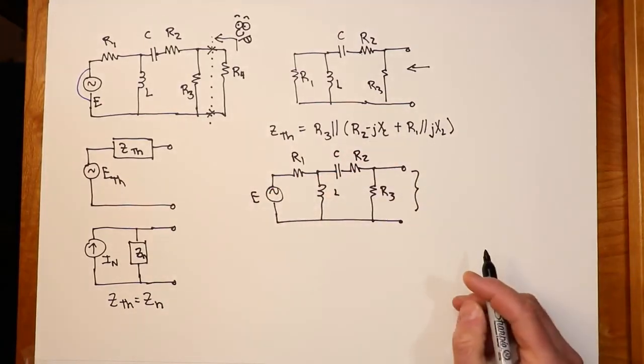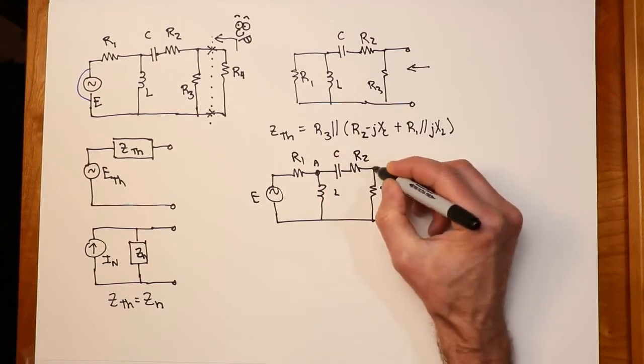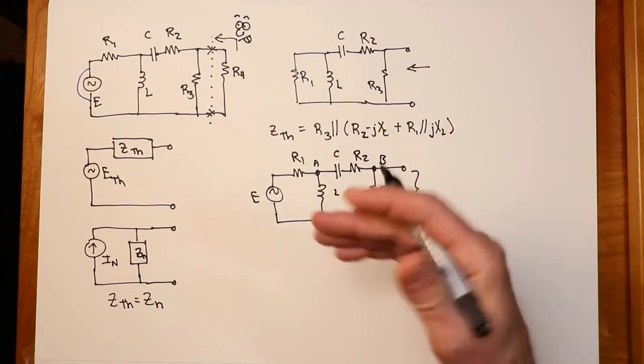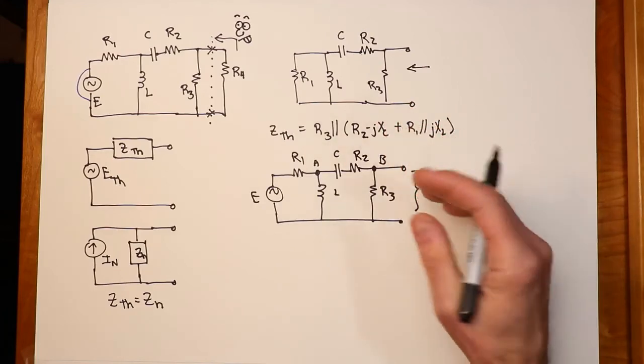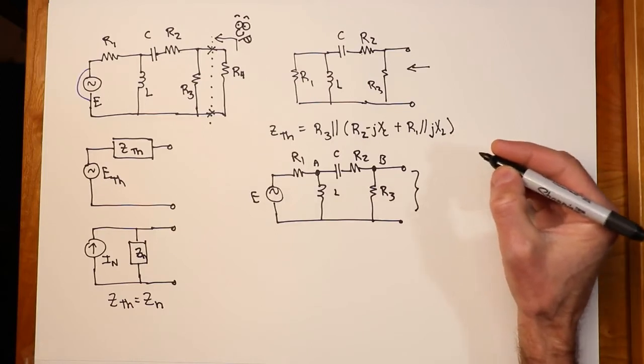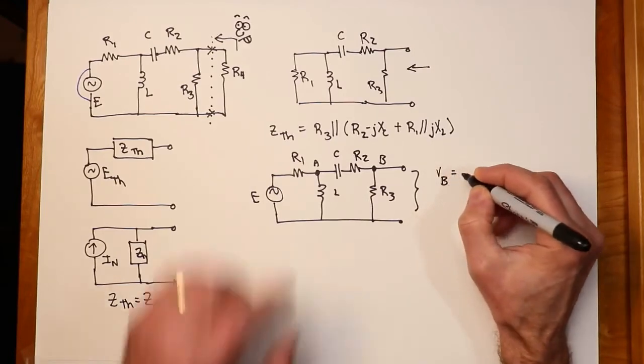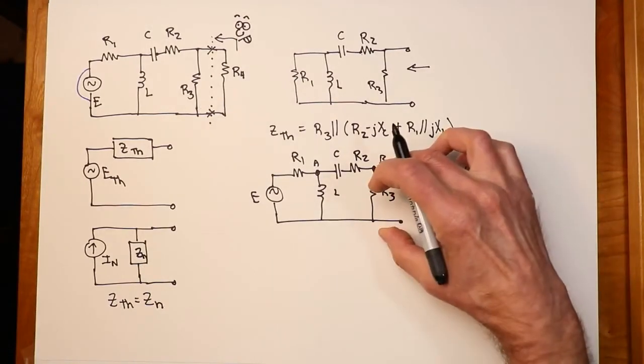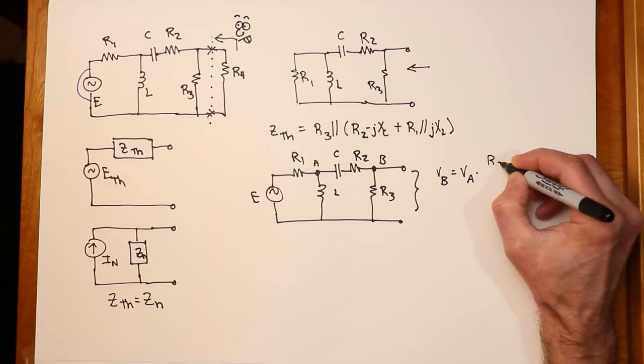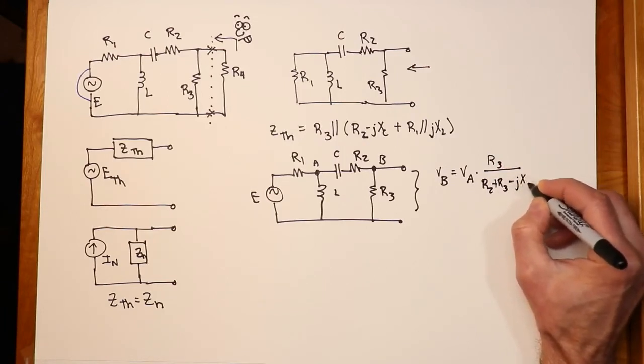Well, there's many different ways we could solve this. One possibility would be to do some voltage divider effects. If we called this, let's say, node A, and we called that node B. The voltage at node B, B to our reference point here, by definition, is the E-Thevenin value. So we could just say, if I knew what VA was, and we'll get to that in a sec, if I knew what VA was, I could just do a little voltage divider to find VB. VB would have to be VA times, the thing we're interested in, R3 over this combination, R3, R2, and minus jX sub C. Just a basic voltage divider rule.